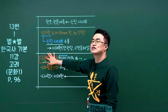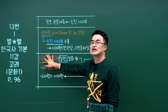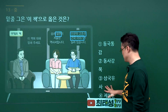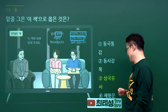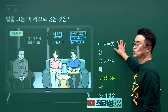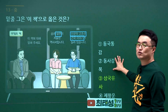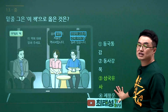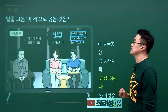일연의 삼국유사 문제입니다. 일연이 지은 책이 삼국유사이니 3번을 고르시면 됩니다. 동국통감은 조선 전기에 만들어진 역사서이고, 동사강목은 조선 후기에 만들어졌습니다. 제왕운기는 이승휴입니다. 정답은 3번입니다.